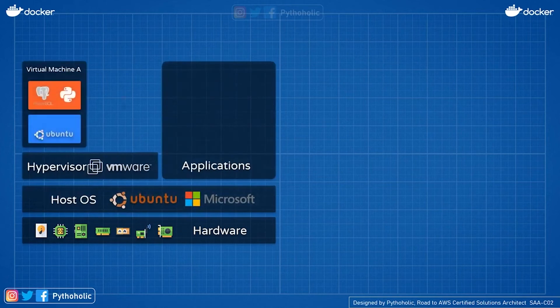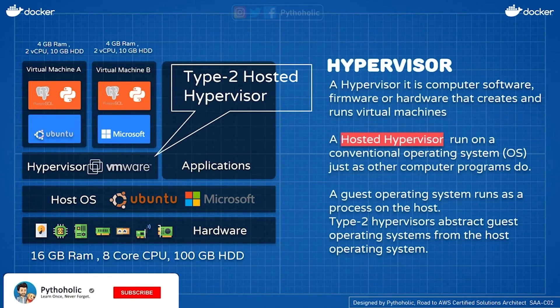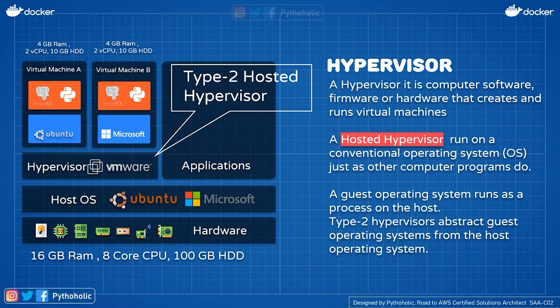In the Type 2 setup, you have the hardware as your resource powerhouse, on top of which you install a host operating system like Windows or Linux. On top of that, you install a special type of hypervisor alongside your existing applications, which helps you run your virtual machines. This is the Type 2 hypervisor, also called a hosted hypervisor — hosted on the operating system itself. A hosted hypervisor runs on the conventional operating system just as other programs would.